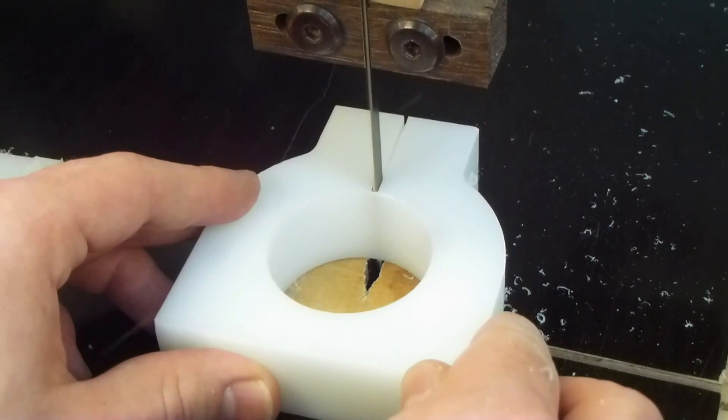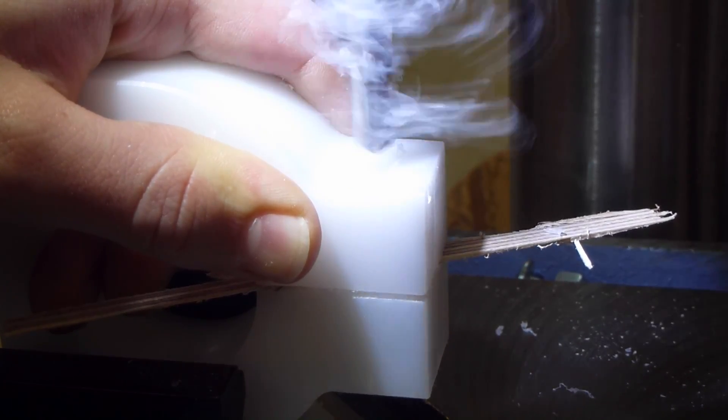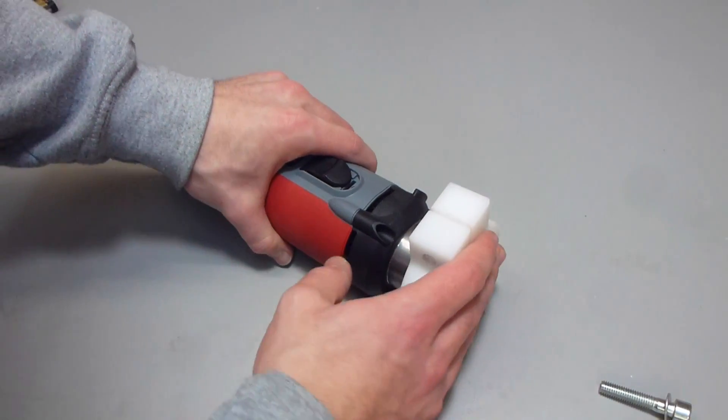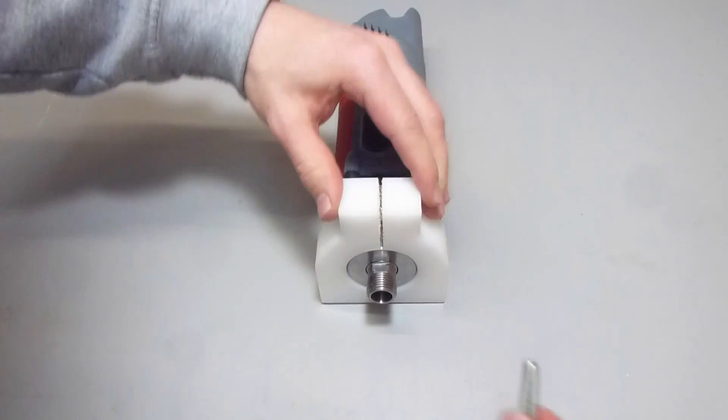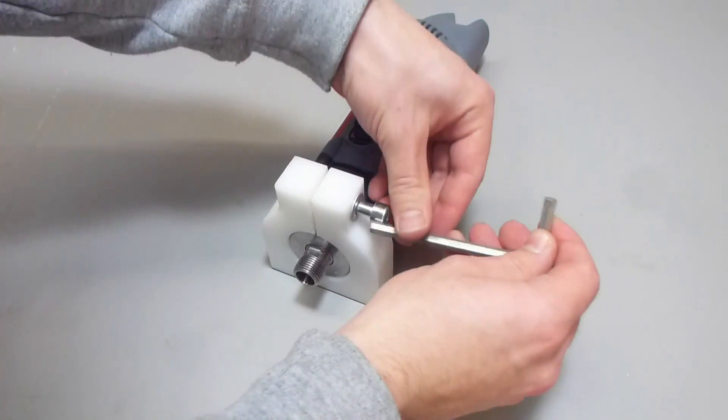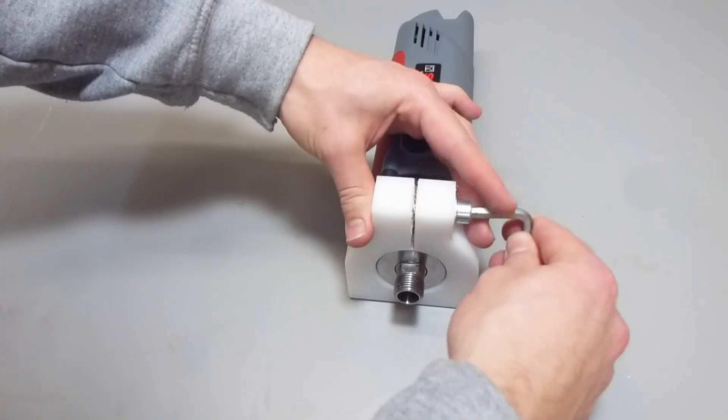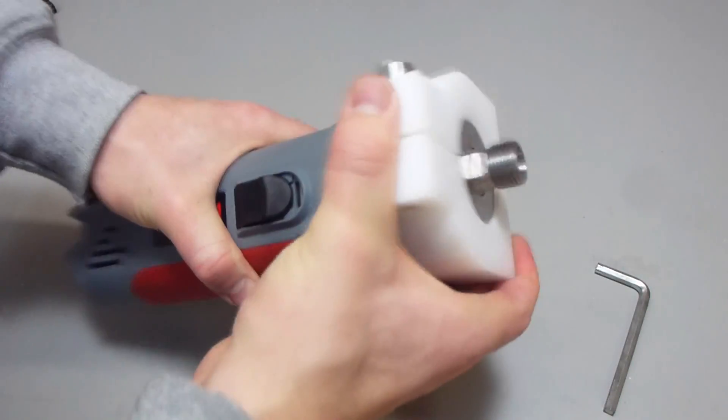After cutting the slot I removed the threads from one side by drilling a larger hole. Now I can fit the bracket over the spindle and tighten it with the bolt. And that will never come loose.